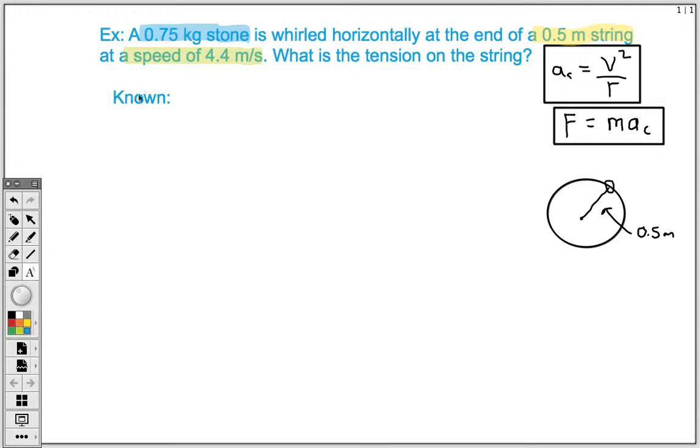So let's kind of get these in. So we know what our mass is. That's going to be our 0.75 kilograms. We said we know what our radius is going to be. That's going to be our 0.5 meters. And we also know our velocity, which is going to be our 4.4 meters per second. So let's scoot that over here. We're going to come back to these.